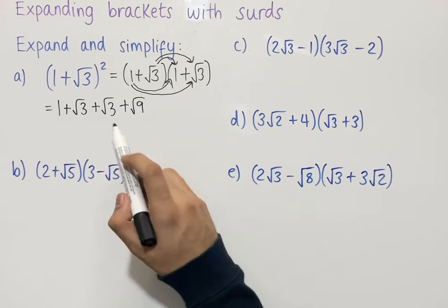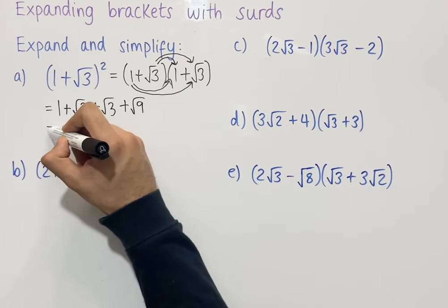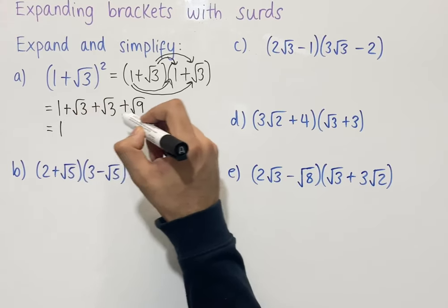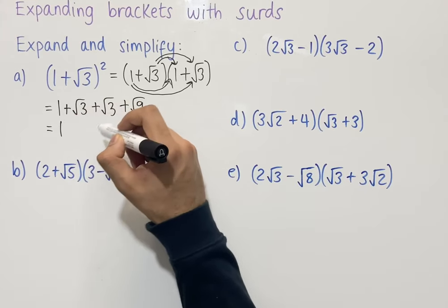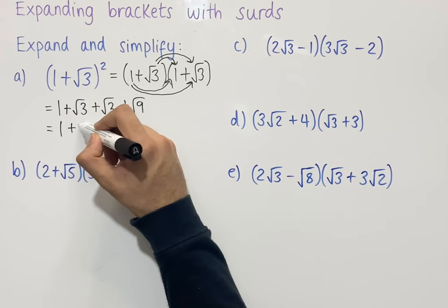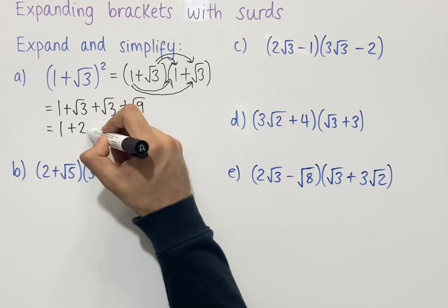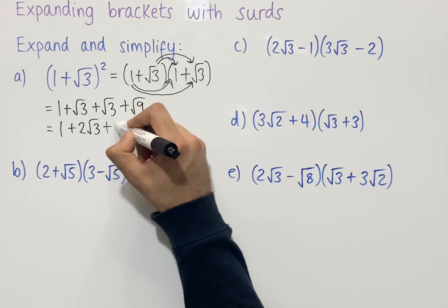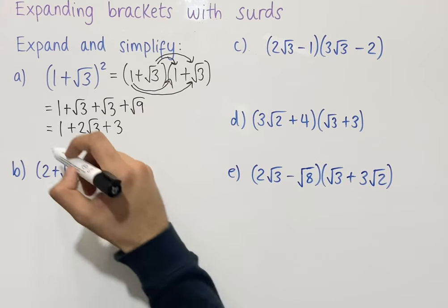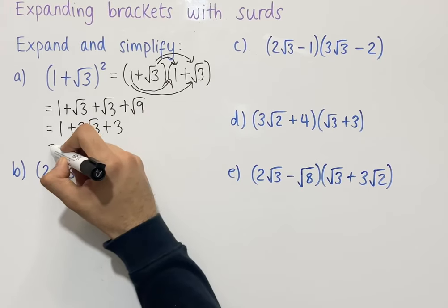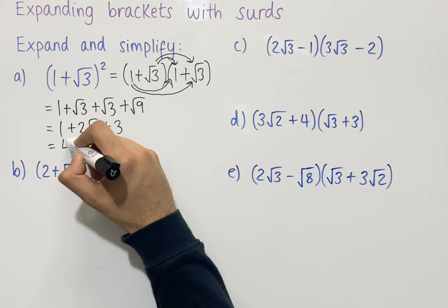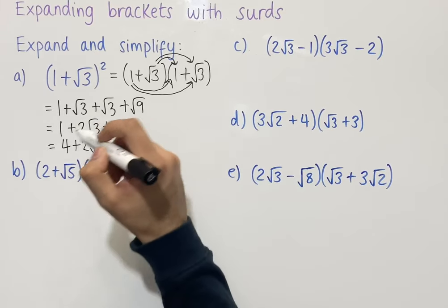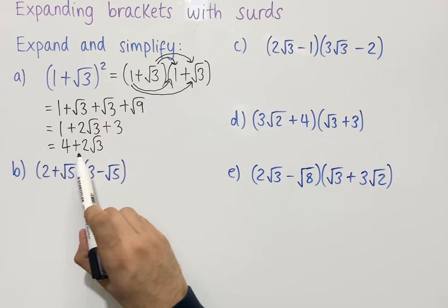If we now simplify and collect like terms: 1 on its own is just 1. Square root of 3 plus square root of 3 equals 2 root 3. Then the square root of 9 simplifies to 3. Collecting like terms, 1 plus 3 is 4, and then 2 root 3 on its own. So our answer is 4 plus 2 root 3.